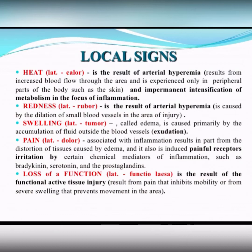About each one: heat, calor, is the result of arterial hyperemia. Why arterial hyperemia? It results from increased blood flow through the area and is experienced only in peripheral parts of the body such as the skin. Also, we have intensification of metabolism in the focus of inflammation, which is also connected with arterial hyperemia and leads to the heat.